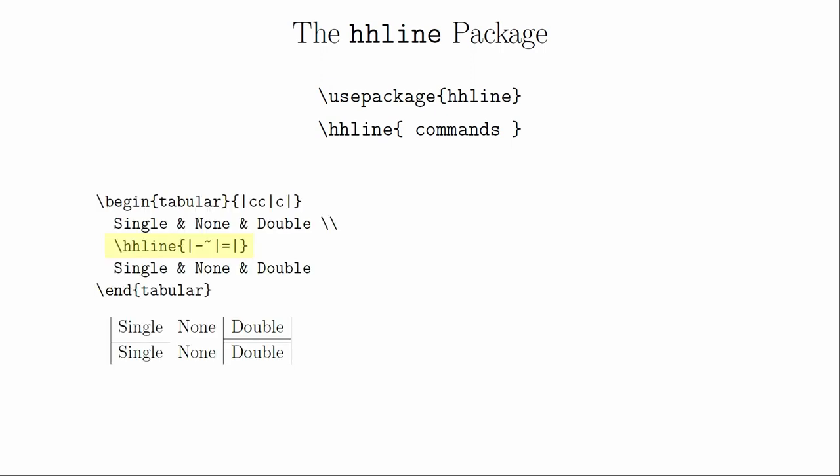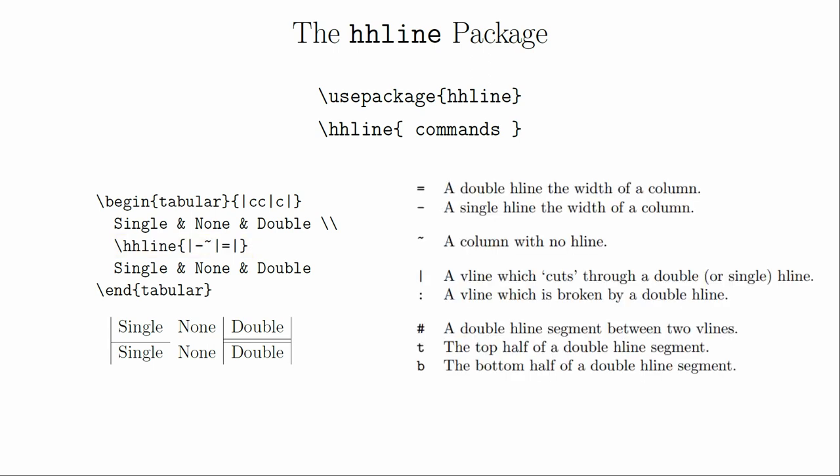With the hhline package, instead of calling hline, you will call hhline and then specify how exactly you want the line to be drawn. A dash will give you a single line, an equal sign will give you a double line, and a tilde will create a gap. You will also need to define the vertical bars to avoid having small gaps in them. This package has a few more options, but you'll have to read through the documentation yourself to learn about those.